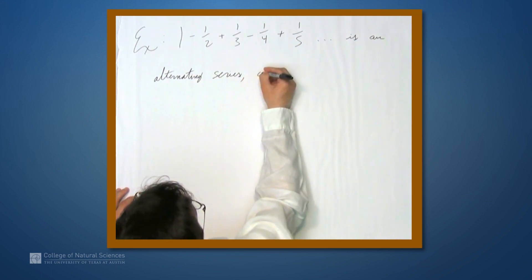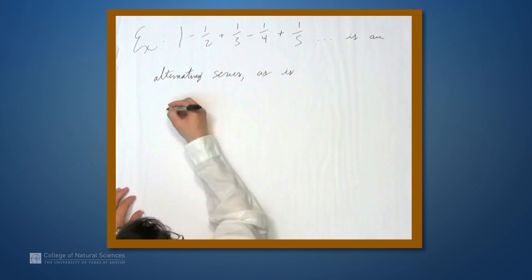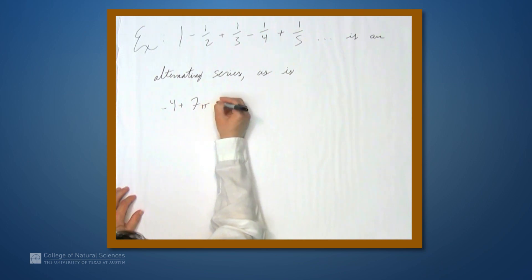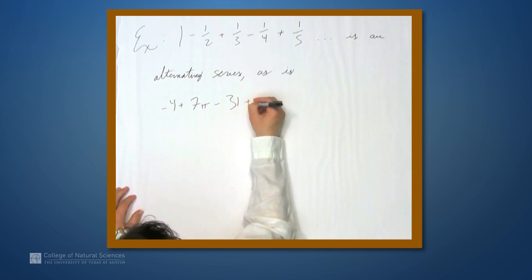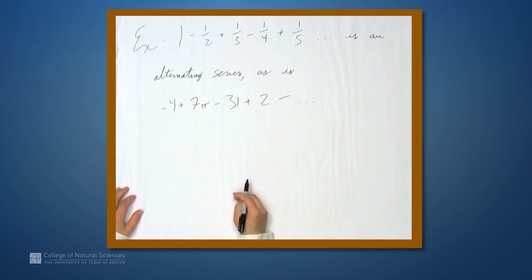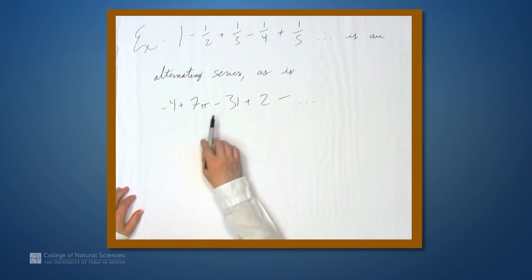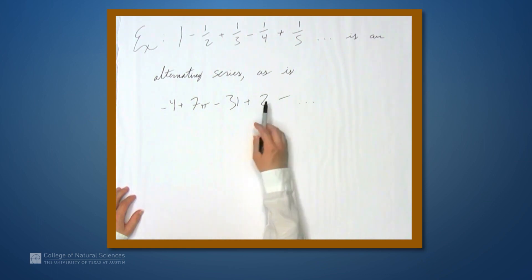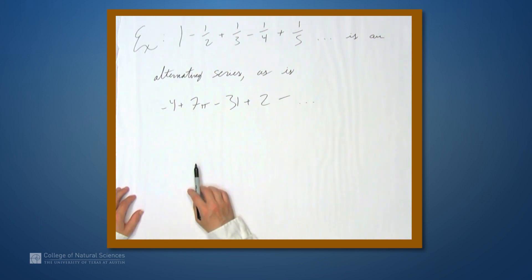This is an alternating series, as is: negative 4 plus 7π minus 31 plus 2 minus something and so on, where there's no discernible pattern, but the first term is negative, the second term is positive, the third term is negative, the fourth term is positive, and so on. It is alternating because the signs are changing with each term.